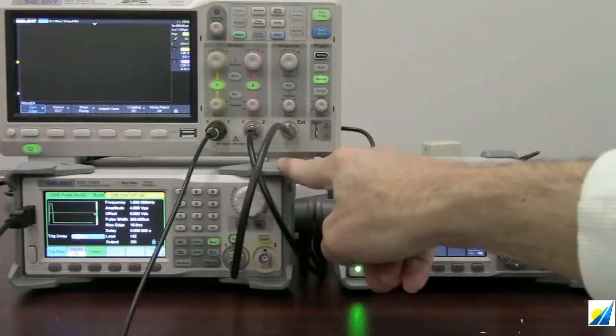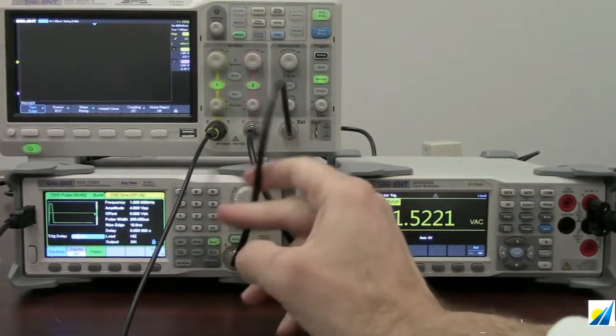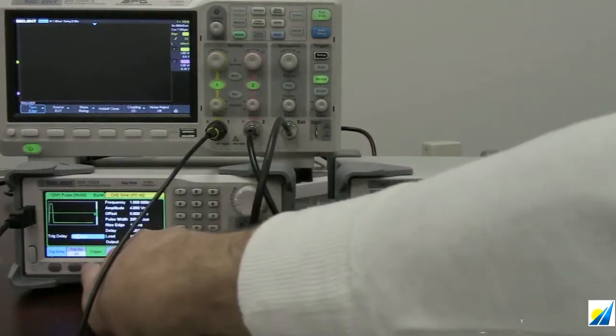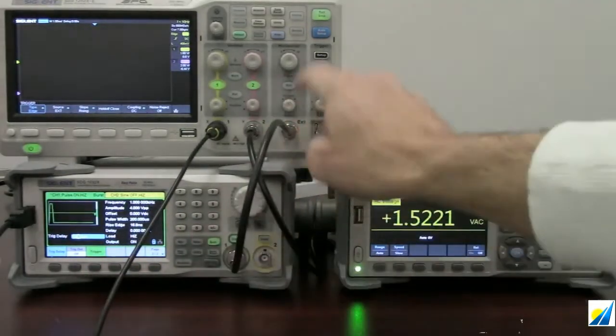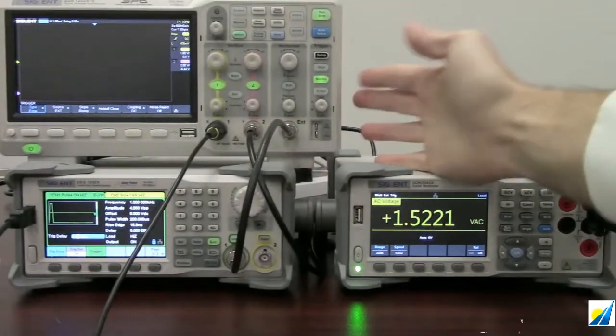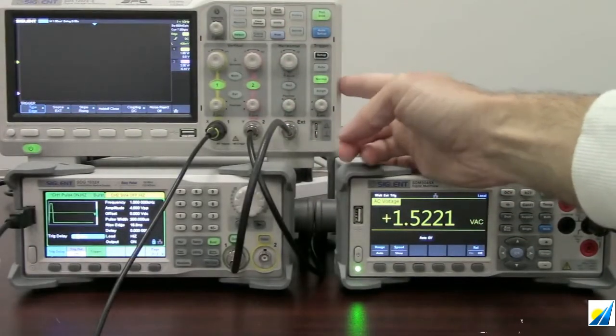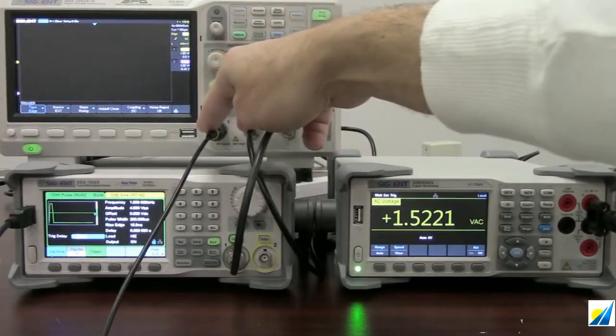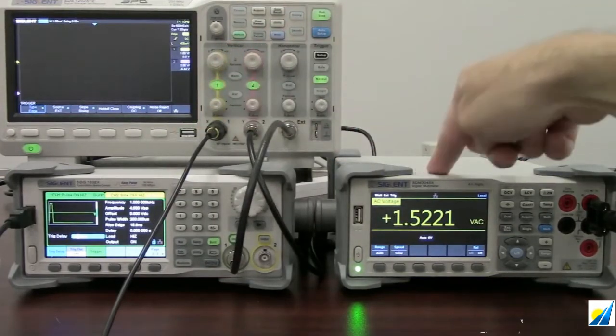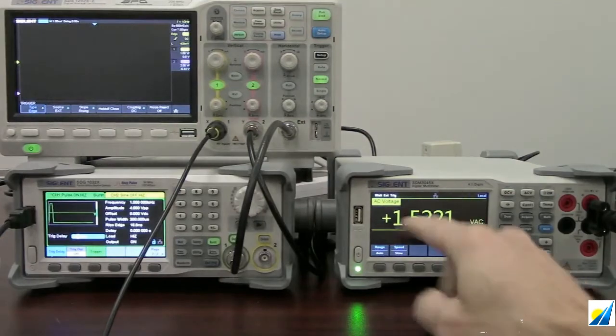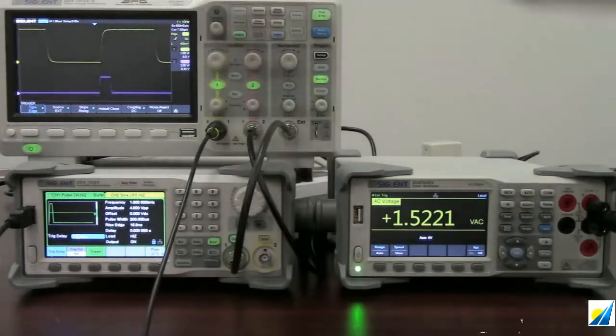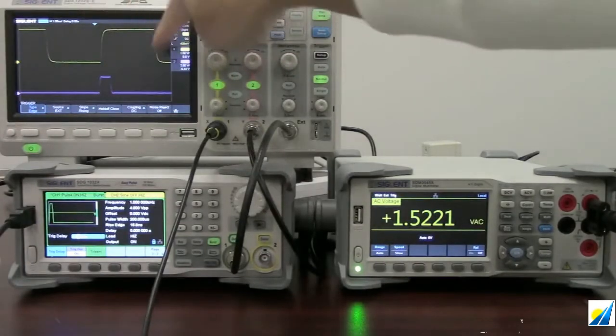I'm using the SDG1032X waveform generator simply to create that external burst. I'm going to manually control that by pressing this trigger button here. When I press the trigger button, a signal is going to go to the external trigger that's going to meet the particular trigger configuration that I have set for the oscilloscope. It's going to then measure these two channels on the scope as well as cause the update reading on the voltmeter. And you can see that right now, pressing the trigger. So the yellow trace is channel 1.